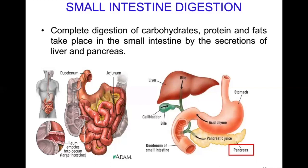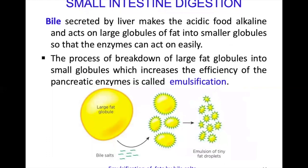Digestion occurs mainly in the C-shaped duodenum, where accessory organs like the liver and pancreas help in digestion. The liver secretes bile, which is stored in the gallbladder. The pancreas secretes pancreatic juice. Both bile and pancreatic juice enter the duodenum through a duct. Bile makes the acidic food alkaline and breaks large fat globules into smaller ones so that enzymes can act on them more easily.